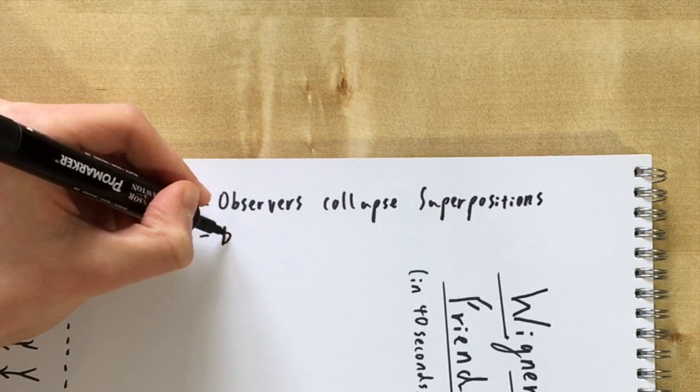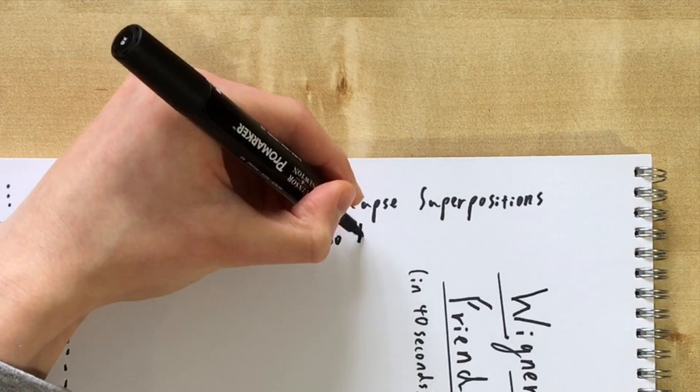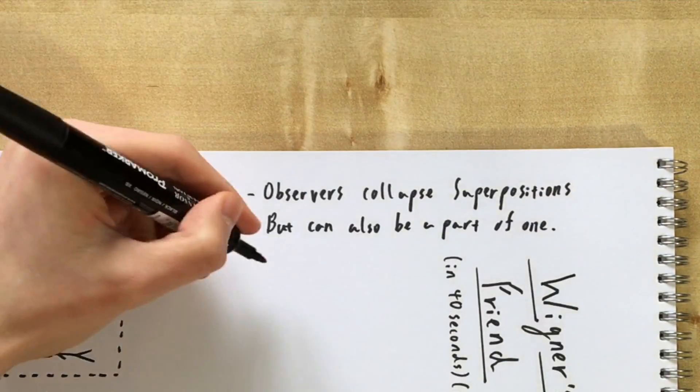Now to quickly recap, observers can collapse superpositions, but they can also be a part of a superposition.